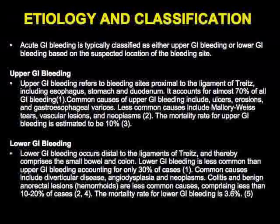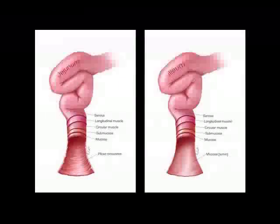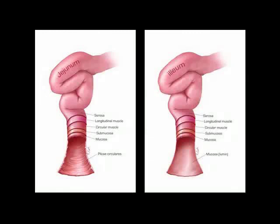Looking at this image, you recognize the importance of thinking about the bowel and where sources of bleeding can originate. It can be from the mucosa — ulcerations from medications — from the submucosa, such as a tumor, or from the serosa, like tumor implants. All of these are possibilities.